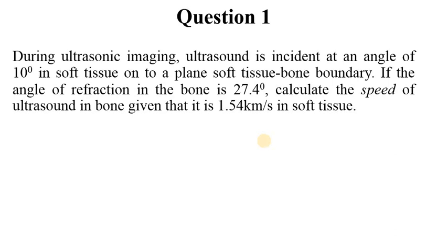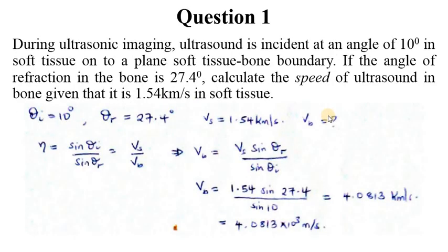Question 1: During ultrasonic imaging, ultrasound is incident at an angle of 10 degrees in soft tissue onto a plane soft tissue-bone boundary. If the angle of refraction in the bone is 27.4 degrees, calculate the speed of ultrasound in bone given that it is 1.54 kilometers per second in soft tissue.